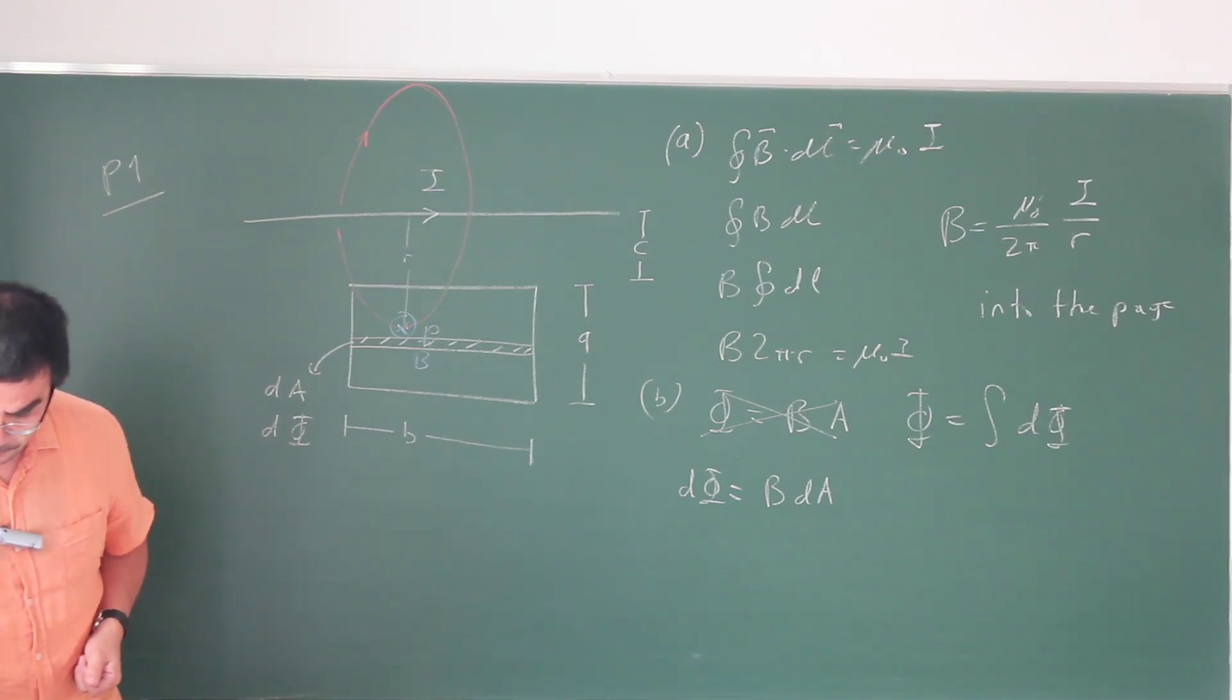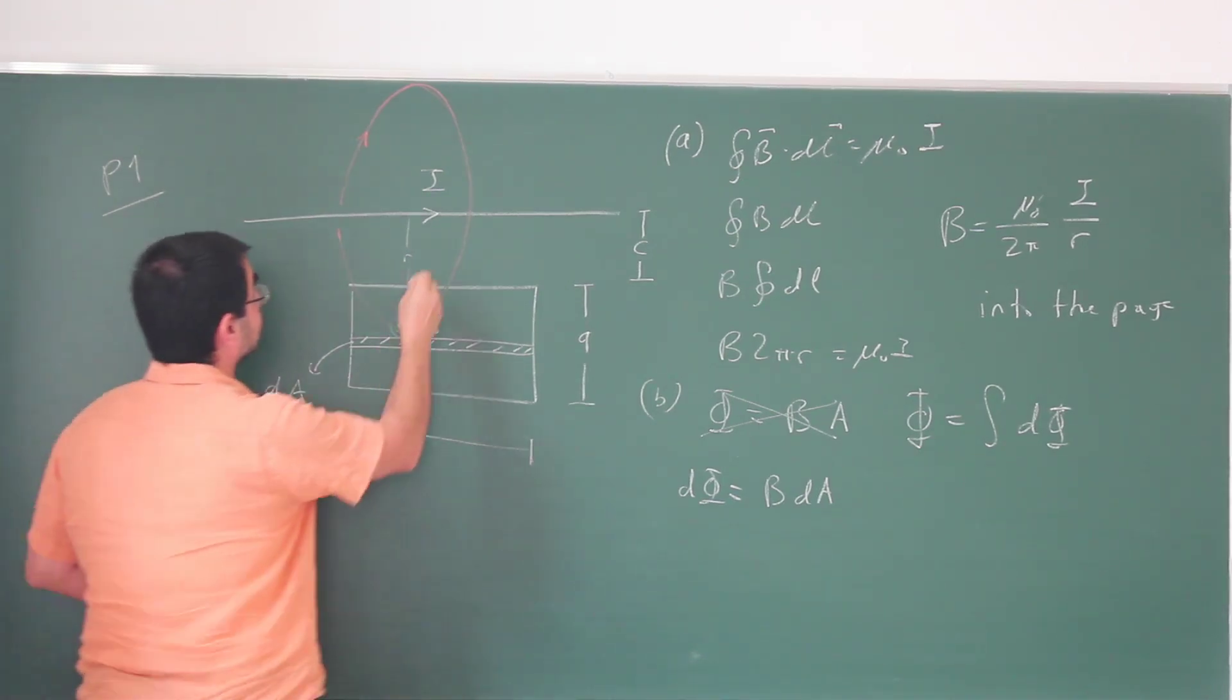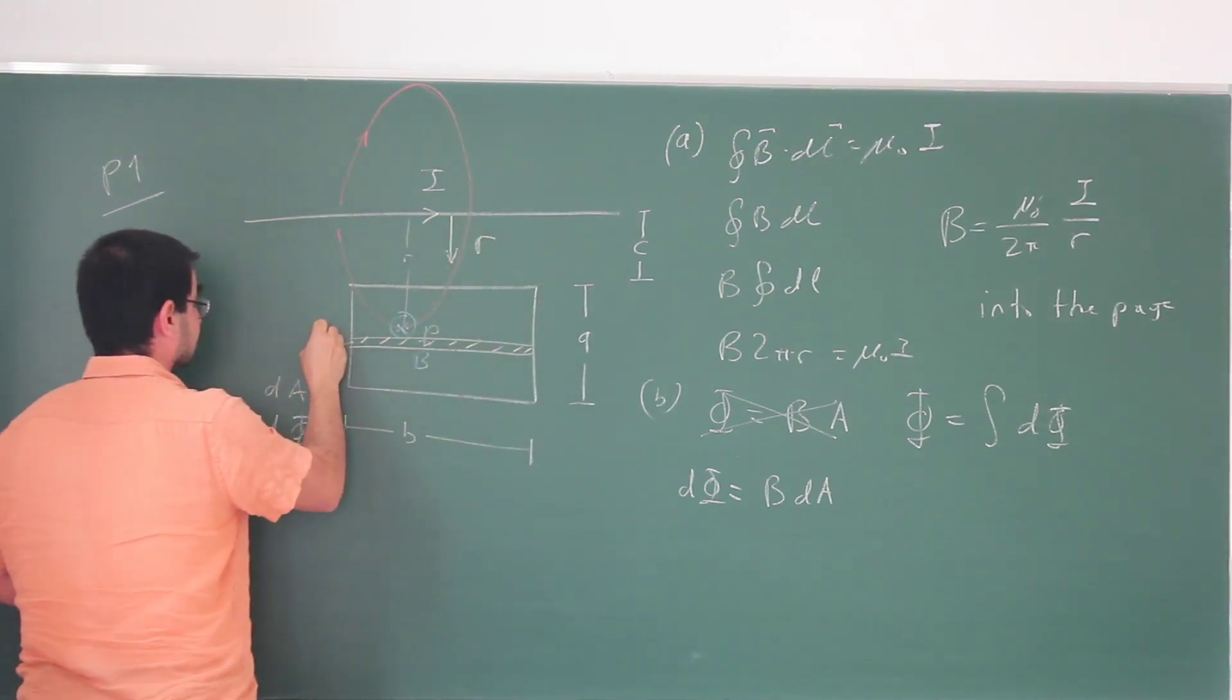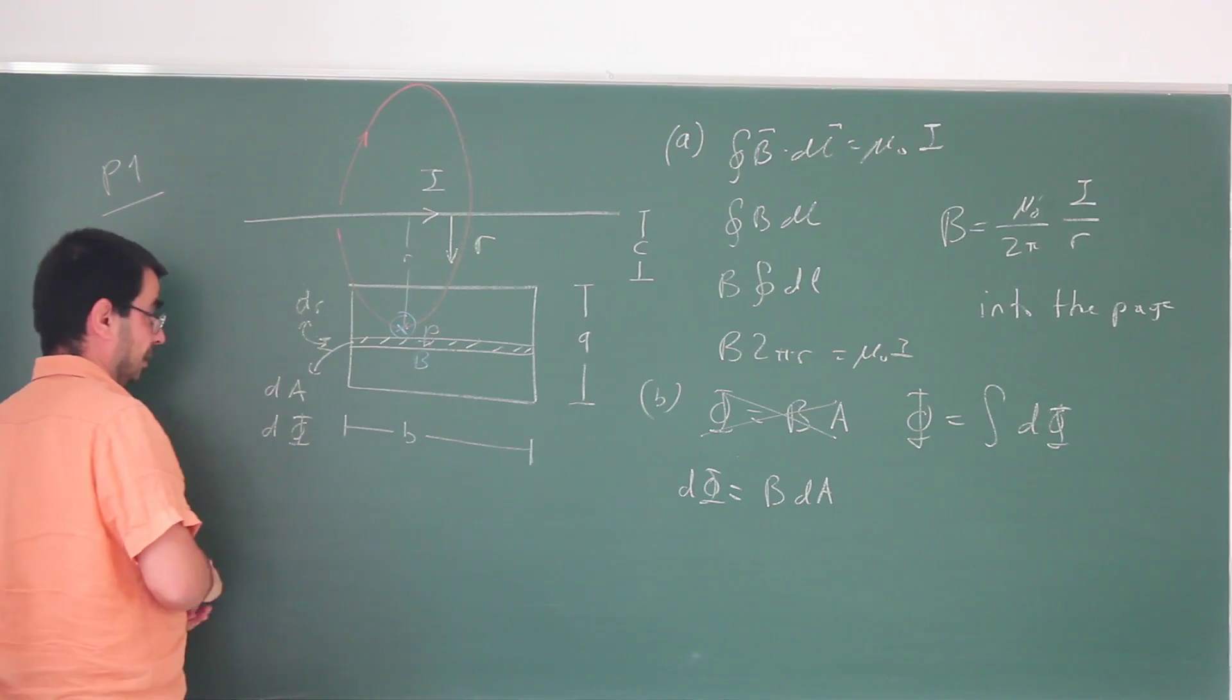So let me take another color of chalk. I'm going to choose a coordinate system like this. This is my r and the thickness of these guys is going to be dR.